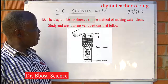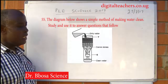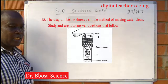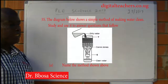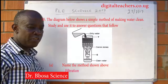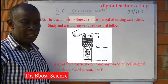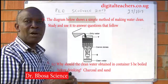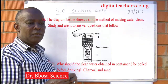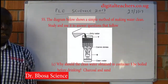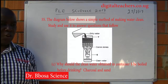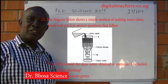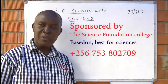The diagram below shows a simple method of making water clean. Part A: name the method shown above — filtration. Apart from cotton, name any other local materials that can replace it — powdered charcoal, fine sand. Part C: why should clean water obtained in container S be boiled? Because filtration does not kill germs.